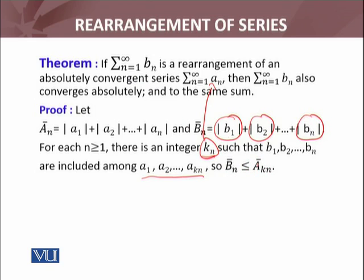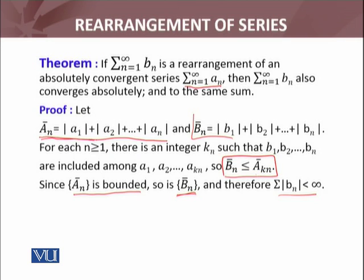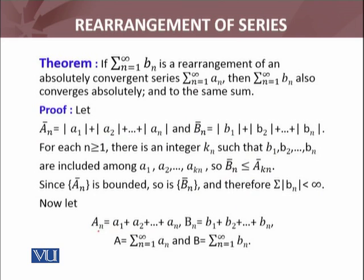We can conclude that the partial sum of the rearrangement of the series is less than or equal to the partial sum of a_bar with subscript k_n. Since a_n is bounded because the series is absolutely convergent — uniformly convergent — so is b_n, because b_n satisfies this condition. Therefore, summation b_n is convergent. The sequence of partial sums of b_n is always less than or equal to the sequence of partial sums of a_n, so b_n's partial sums are also bounded and convergent.